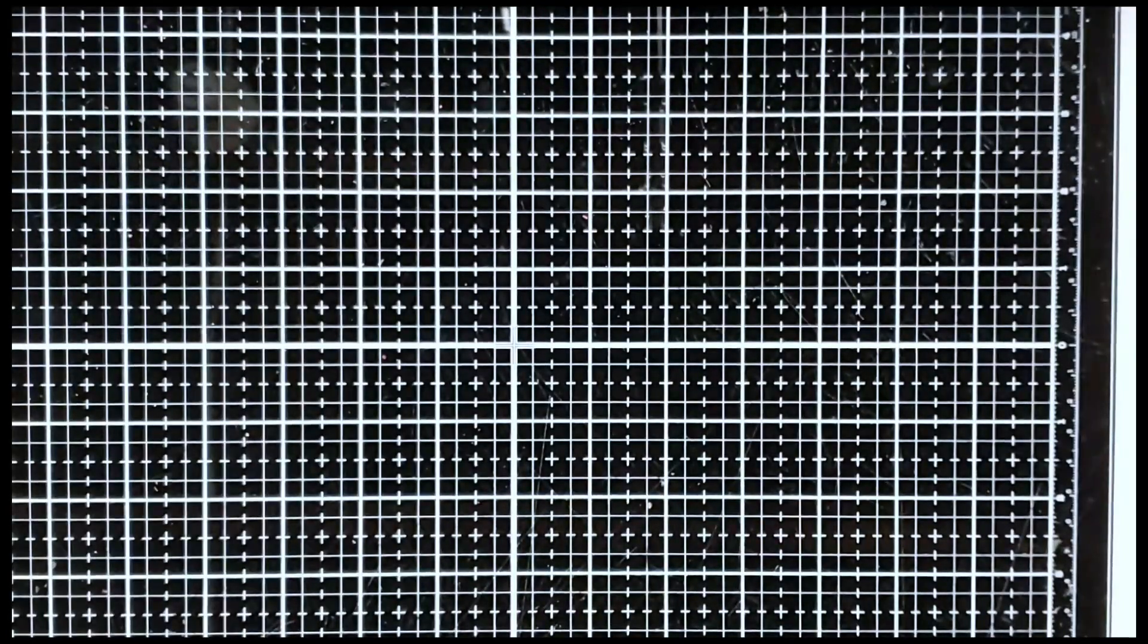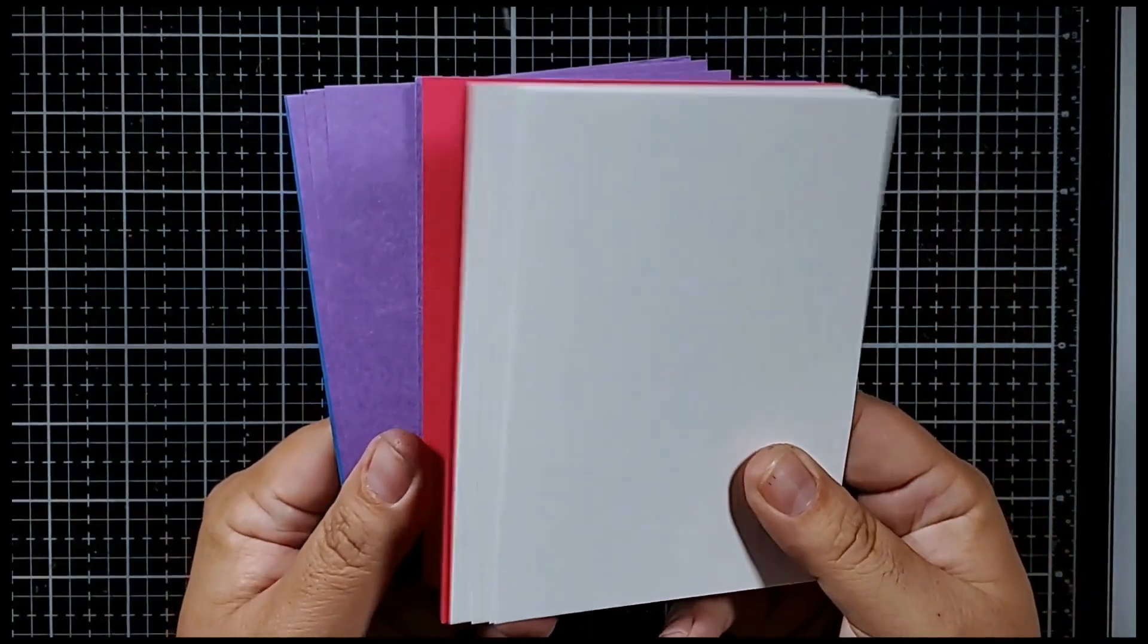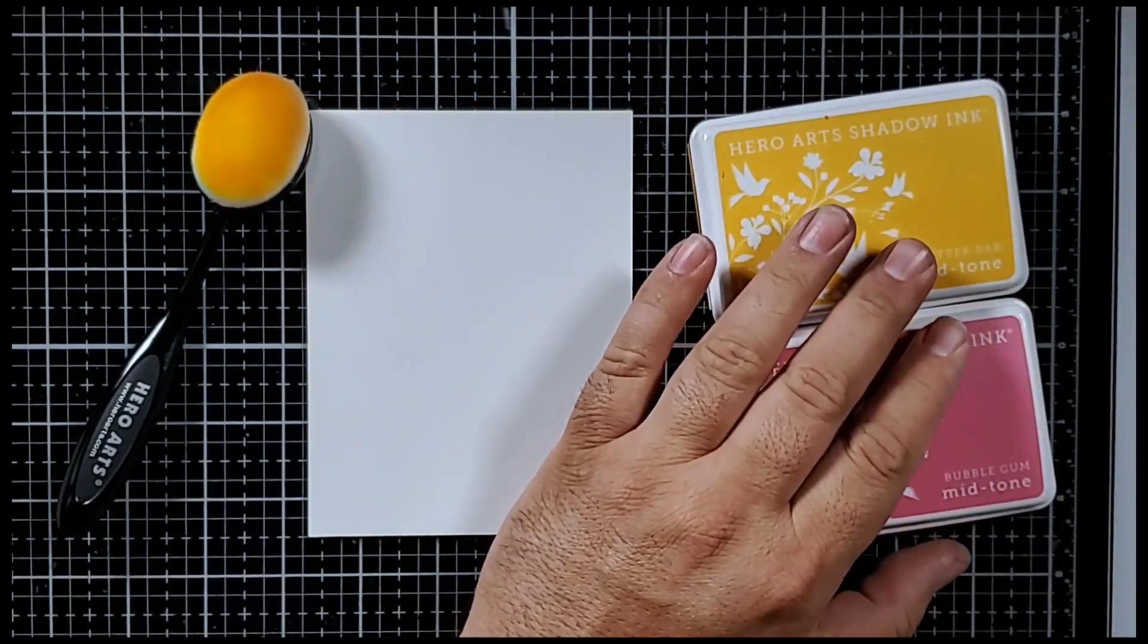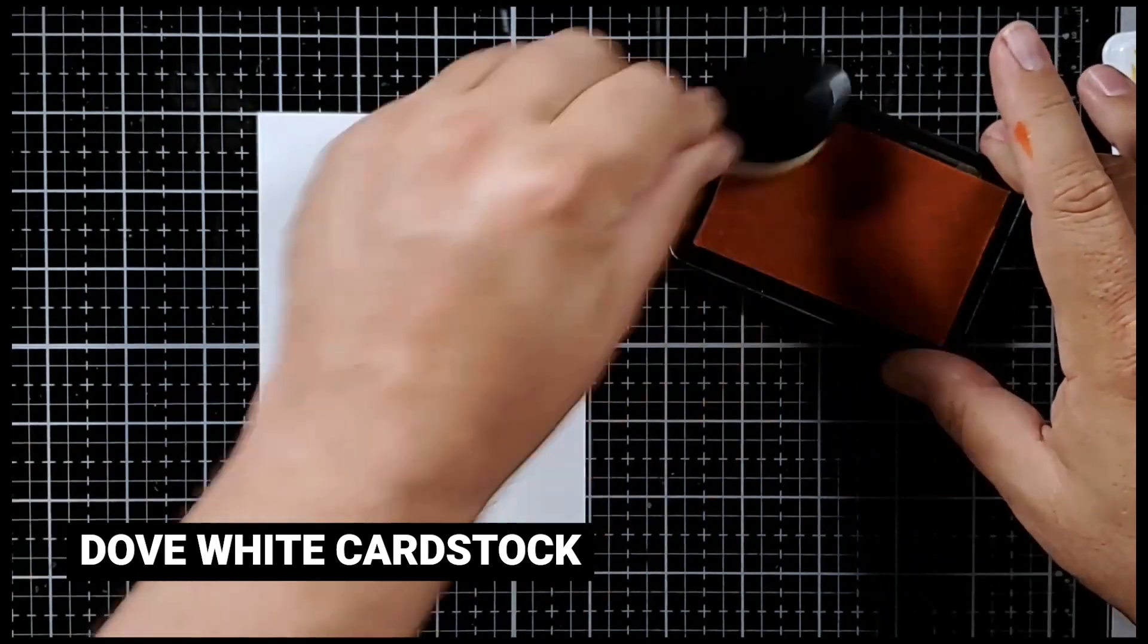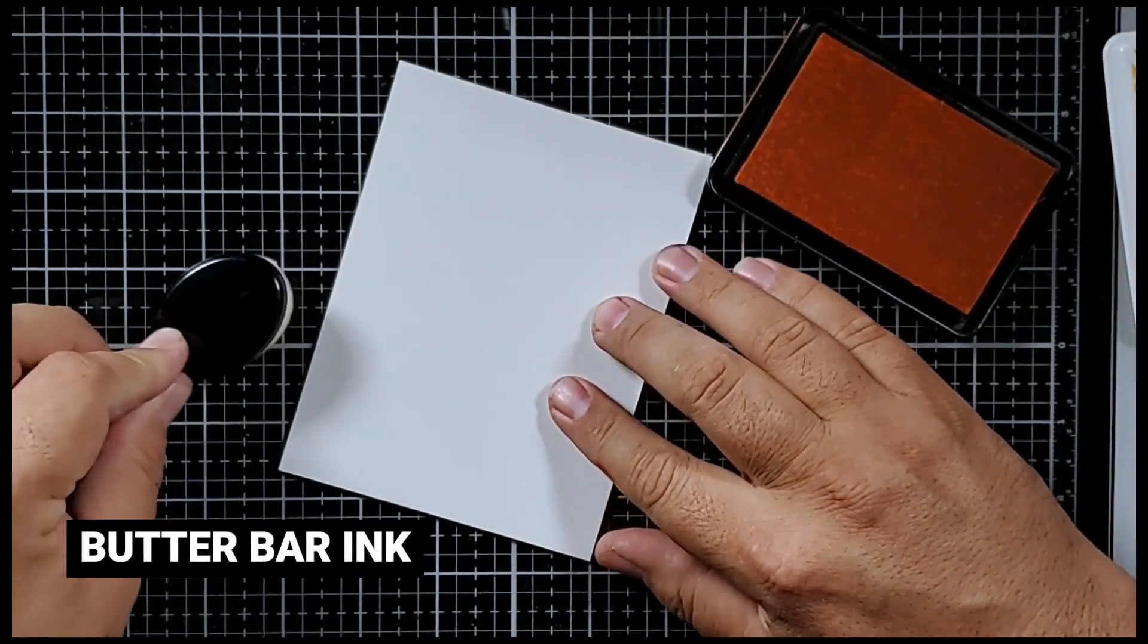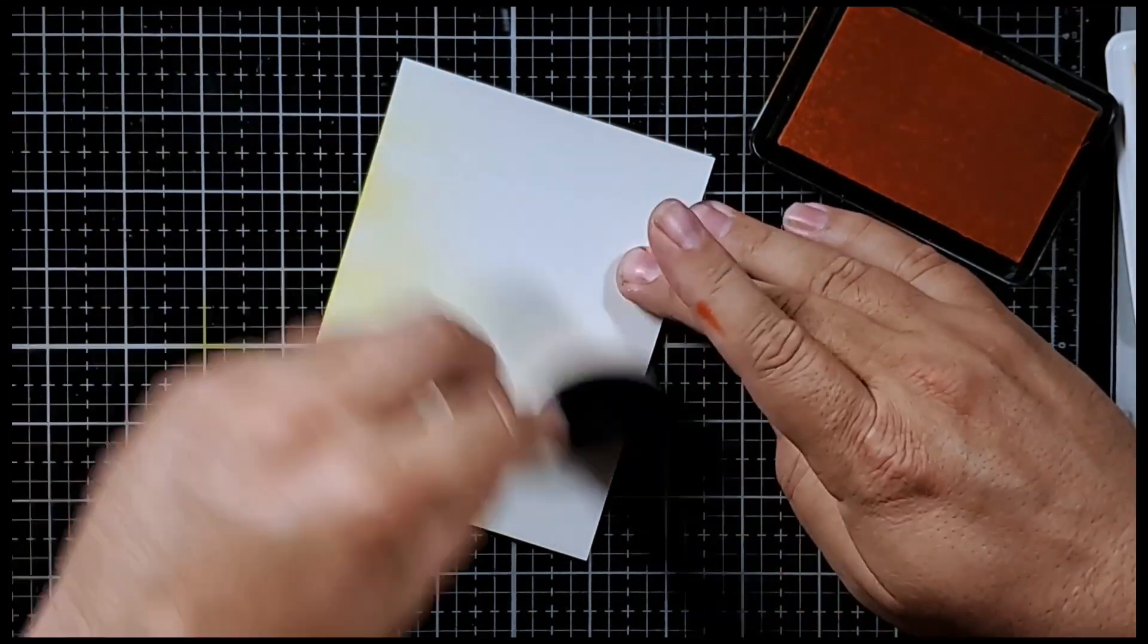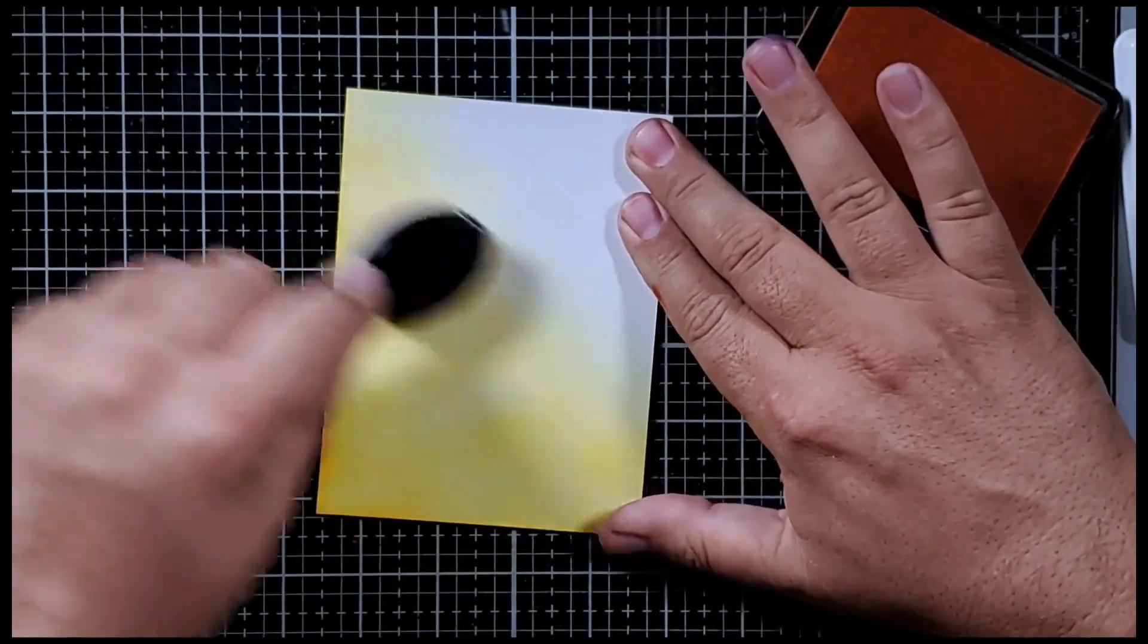Today we're going to be using Hero Hughes cardstocks in dove white, azalea, and lapis. We're going to be using butter bar and bubblegum ink for the first panel. So I'm going to get the dove white cardstock panel out, and with my blending brush I'm going to ink it up and then tap it out on my workspace. I do that because I want to create a panel that's very soft and I want to build color up.